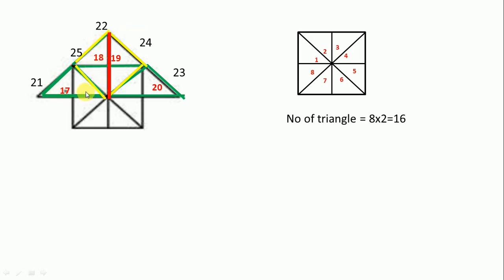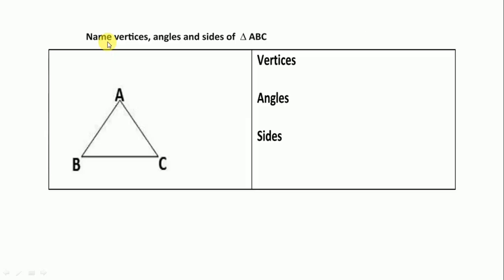Now we see from this line the bigger triangle, this is 26 and from this side it is 27, the bigger one. One more triangle is there, this one bigger triangle, so 27 plus 1 is 28. So total number of triangles is 28.